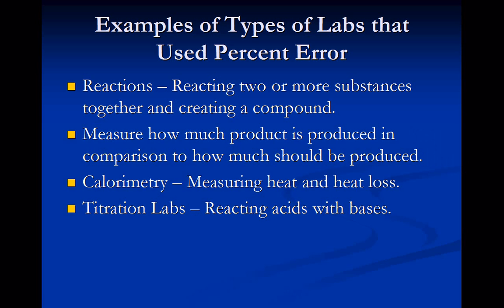Other types of labs that use percent error include calorimetry, which is measuring heat and heat loss. In calorimetry labs you can actually get a very high percent error — I once received a 34,000 percent error in a calorimetry lab, and according to my teacher, that was actually a very good number. Titration labs are also another type, where you react acids with bases and measure how much you need to react. Based on using a formula for how much you should need versus how much you actually need, it's the same idea as reaction labs — there's some percent error involved based on many different factors.